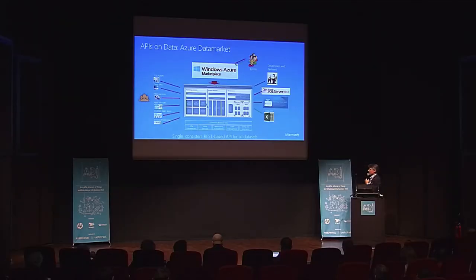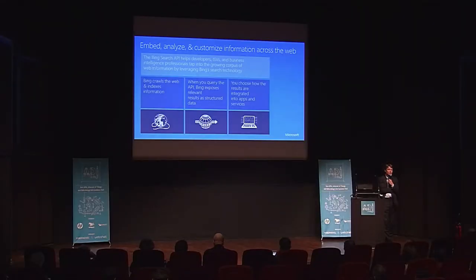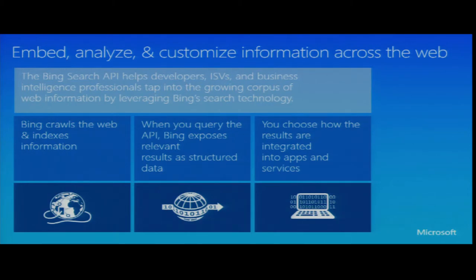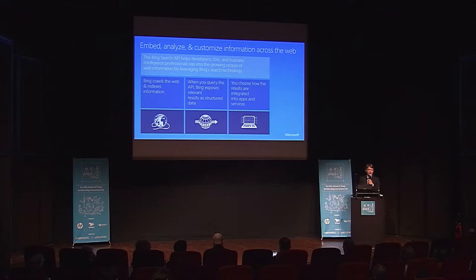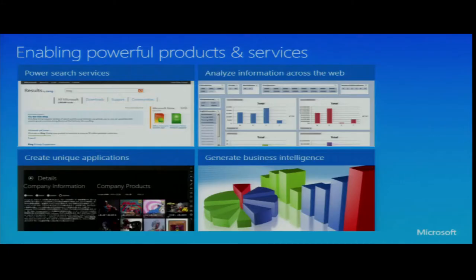We're also using this platform ourselves for features we are developing with our search engine Bing. Bing is interesting because the web is a very large source of data and content, but relatively difficult to analyze, collect, and aggregate. One of the things we've been doing is using the Bing engine and creating an API on top of it that enables you to leverage the power of Bing — connect to Bing through a standard API and get structured data back. It's slightly different from a basic search engine in that you don't get search results back; you get actually structured data that you can integrate into an application or service.